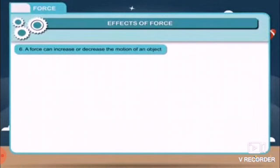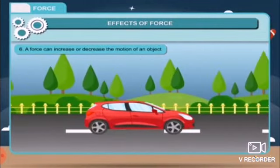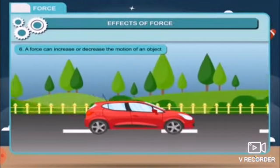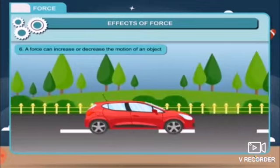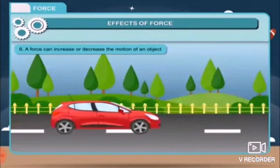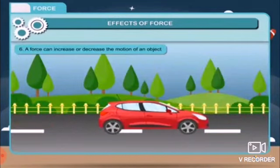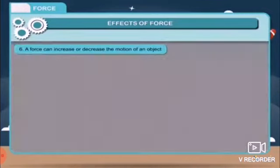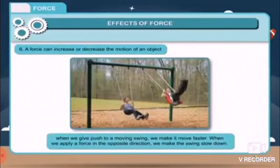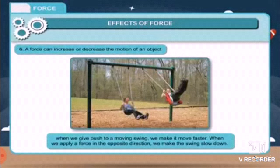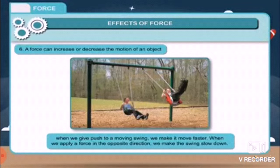Sixth, a force can increase or decrease the motion of an object. When a force is applied on a moving body, it can bring about a change in the speed of a moving body, depending upon the direction in which the force is applied. For example, when we give a push to a moving swing, we make it move faster. When we apply a force in the opposite direction, we make the swing slow down.